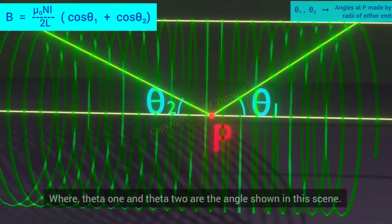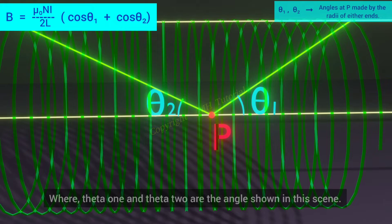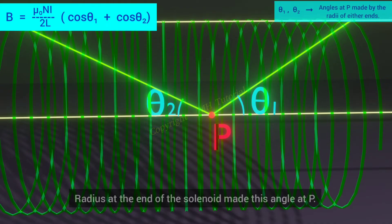Where theta1 and theta2 are the angles shown in this scene. Radius at the end of the solenoid made this angle at P.